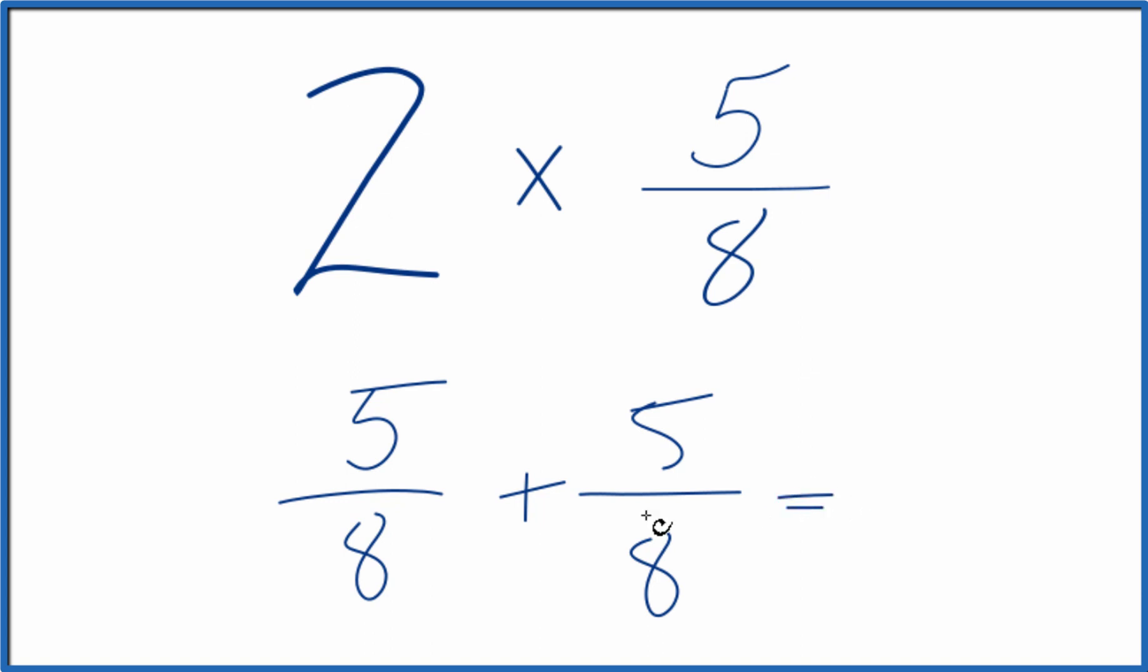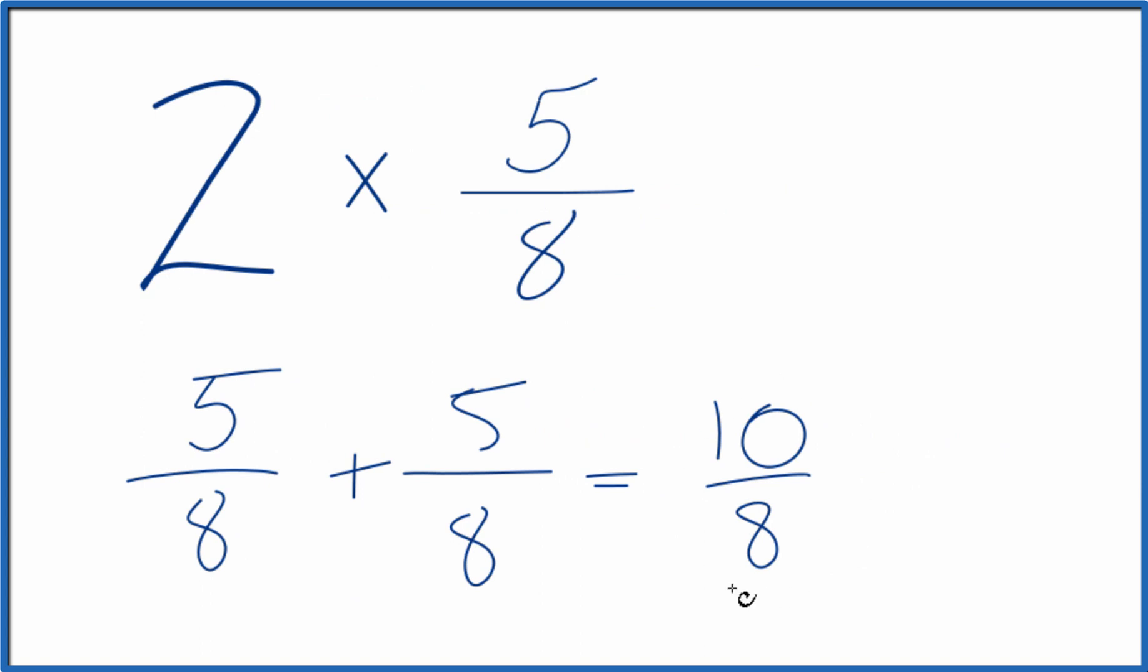When we're adding fractions, the denominator is the same. We'll just keep that here, then we add the numerators. 5 plus 5, we have 10 eighths. So 2 times 5 eighths, that gives us 10 eighths.